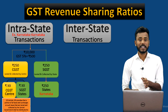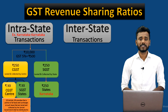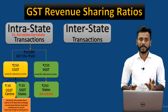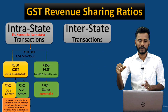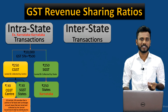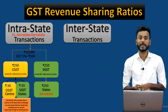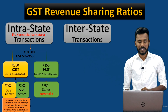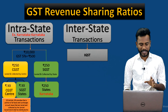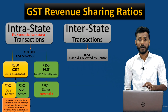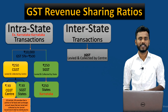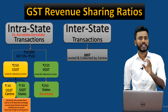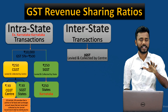Now let us understand the interstate transaction — that means when the supply is happening to a state other than your own. For example, you are located in state X and you are selling goods to state Y; that is called an interstate transaction, a supply between two states. On this interstate transaction, IGST — Integrated Goods and Services Tax — will be levied and collected by the central government.